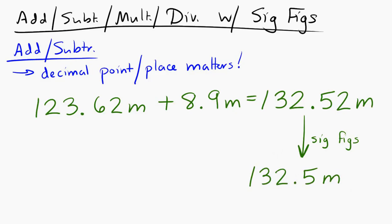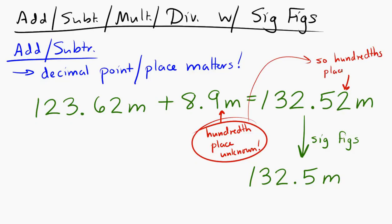That's because one of the numbers has no information about the hundredths place. So if we don't really know what's going on in the hundredths place in that number, then when we add them together, we also don't know what's really going on in the hundredths place. So when we add and subtract, the result that we get only has sig figs down to the bigger least significant decimal place.